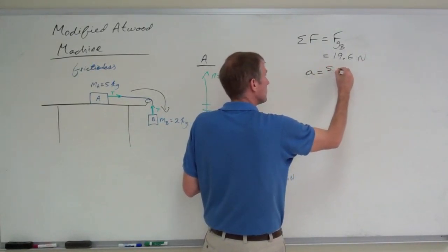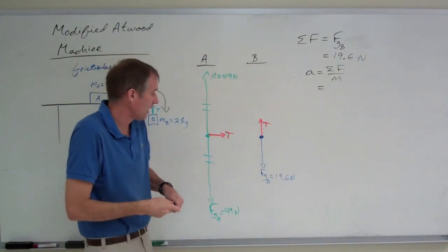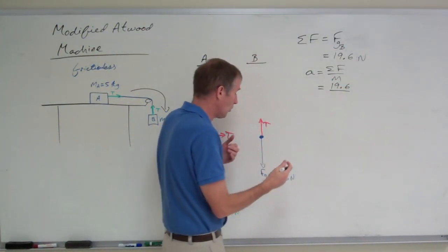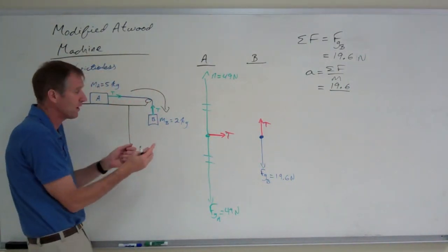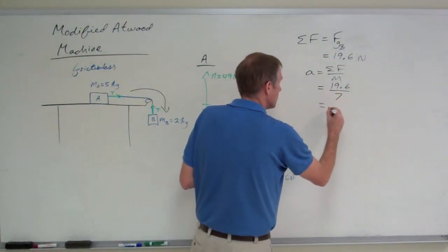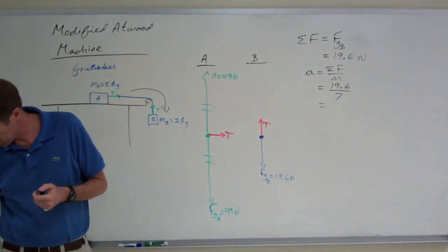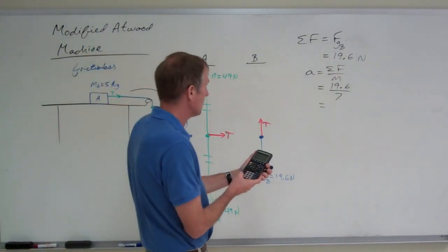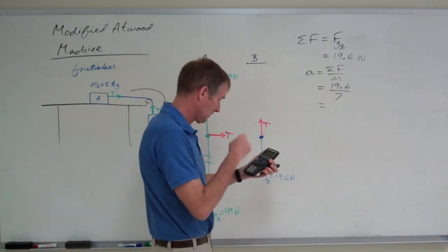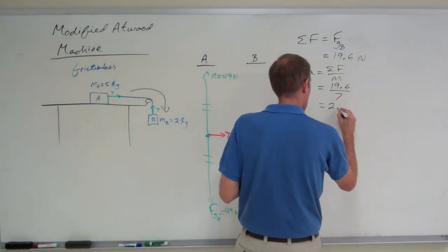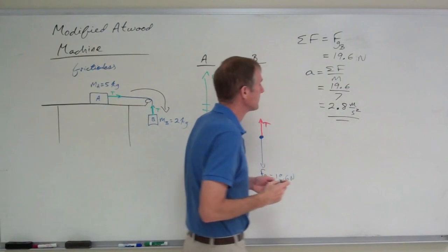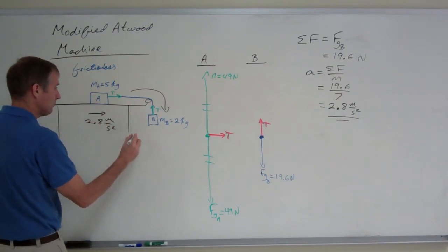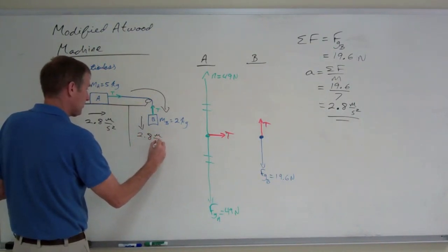Acceleration equals net force over mass — but this is the acceleration of the entire system, not just block B. The net force acting on the whole system is 19.6 newtons, divided by the total mass of the whole system: 2 + 5 = 7 kilograms. So 19.6 ÷ 7 = 2.8 meters per second squared. That is the acceleration of the system: block A accelerates to the right at 2.8 m/s² and block B accelerates downwards at 2.8 m/s², because they are all tied together as a single system.